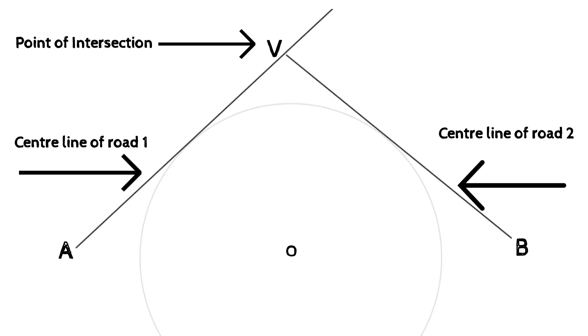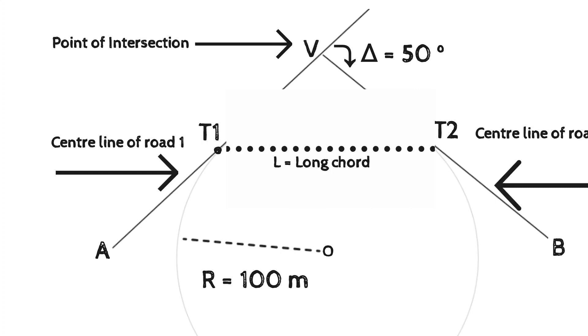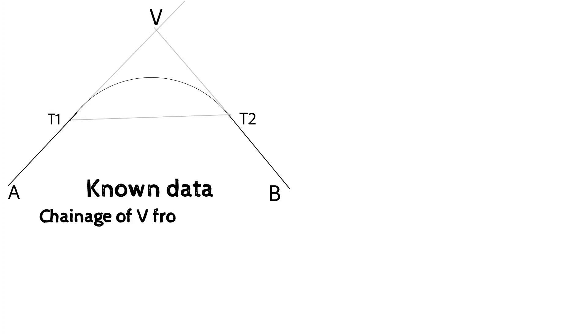Now we will consider the radius of curve R is equal to 100 meter and the deflection angle at intersection is 50 degrees. T1 and T2 are tangent points on curve. Line joining T1 and T2 is the long chord and it is denoted by L. We have known data: AV is 100 meter, R is 100 meter, and deflection angle is 50 degrees.